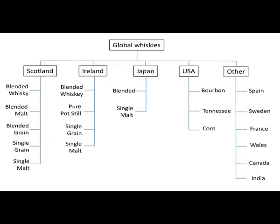Whiskey is famous from regions like Scotland, Ireland, Japan, USA, and other countries like Spain, Sweden, France, Wales, Canada, and India. India produces very good quality whiskey. France actually produces more whiskey than Scotland and is a very important region for whiskey production. Scotland is of course famous for its whiskeys, as are Ireland and Japan. We will discuss each region one by one.